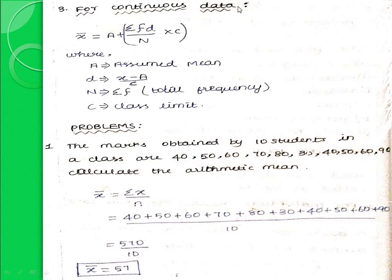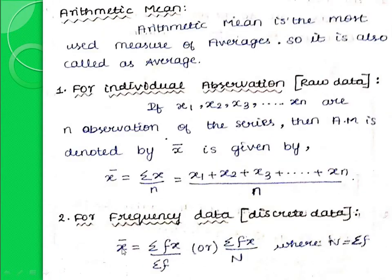Next, continuous grouped data. The formula for finding arithmetic mean is x-bar equal to a plus summation fd by capital N into c, where a is the assumed mean, d equal to x minus a by c, and capital N is equal to summation f, the total frequency, and c is the class size. For this grouped data, we can also use the direct formula: x-bar equal to summation fx by summation f.